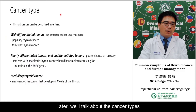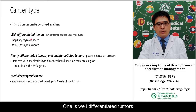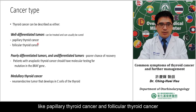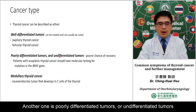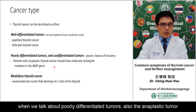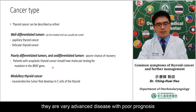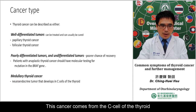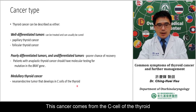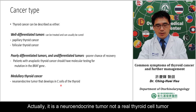Thyroid cancer can be described as three types. The first is well-differentiated tumors, which include papillary thyroid cancer and follicular thyroid cancer. The second is poorly differentiated or undifferentiated tumors, also called anaplastic tumors — this is a very advanced disease. The third is medullary thyroid cancer, which comes from the C cells of the thyroid and is a neuroendocrine tumor, not a typical thyroid cell tumor.